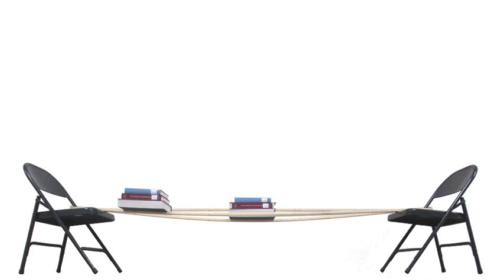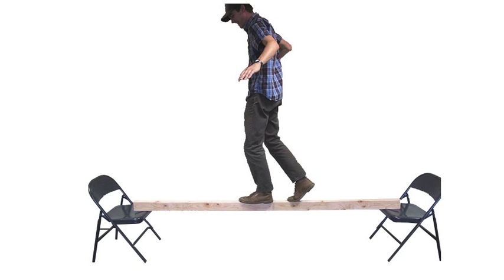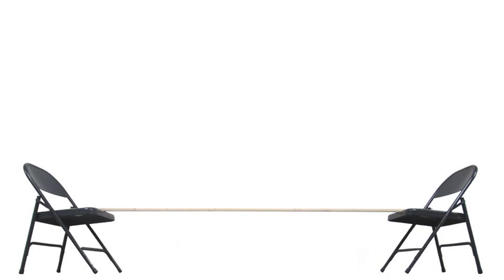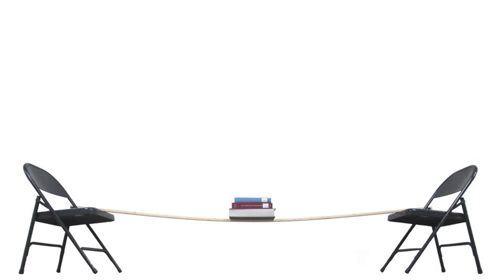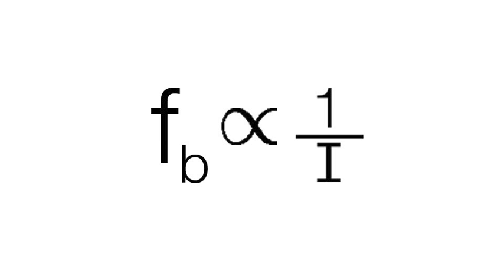By this point in his experiments, the student knows that the orientation of a given rectangular beam under a given load has a significant effect on the resulting bending stress. Take, for example, a 2x4 in both vertical and horizontal orientations. Even though the beams have the same cross-sectional area, the student knows that the vertically oriented beam is much stronger and experiences less bending stress because it has a higher moment of inertia. The horizontally oriented 2x4 would deflect much more under the same load, experiencing much greater bending stress. So, the larger the moment of inertia, the lower the bending stress, and the smaller the moment of inertia, the greater the bending stress. Therefore, the student realizes that bending stress is inversely proportional to the beam's moment of inertia.